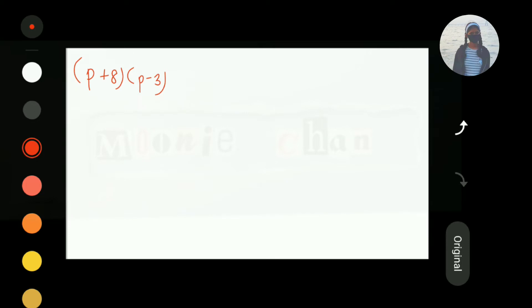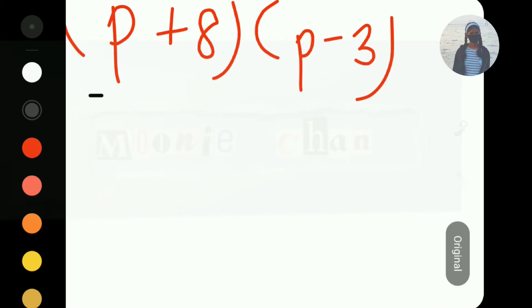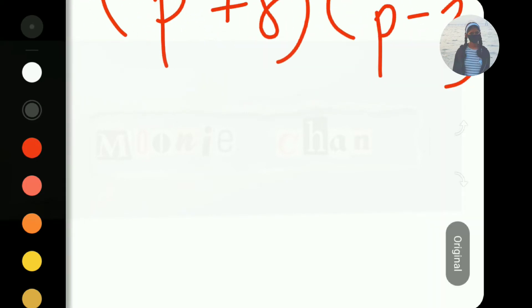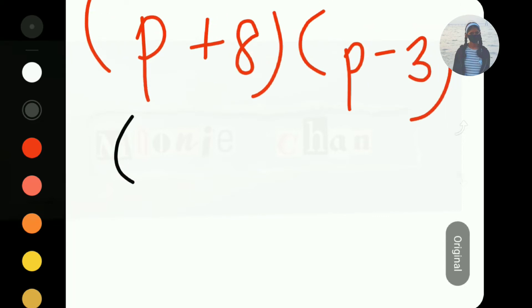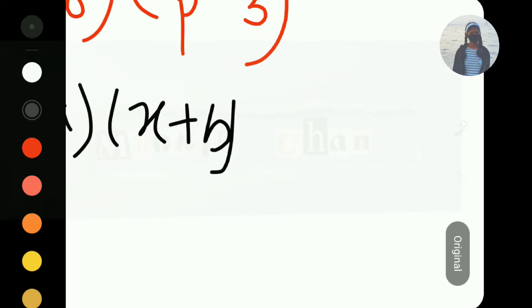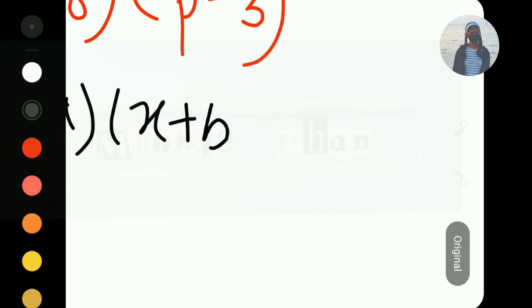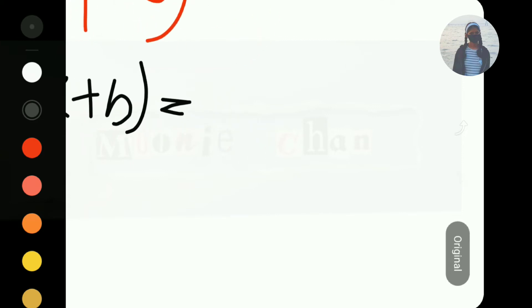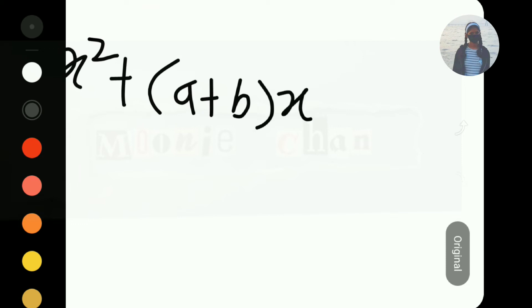The formula we are using to solve this, we'll write it below. Okay, X plus A into X plus B equals to X square plus A plus B the whole X plus AB.